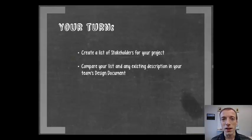So your homework for this piece of this module is going to be to simply create a list of stakeholders for your project. So take a minute now and write those down, and then go back to your team's design document and compare your list to the list in the design documentation. If your list has things that weren't included, update the list. If the list had things that you hadn't considered, take note of that so that you can do a better job in the future.